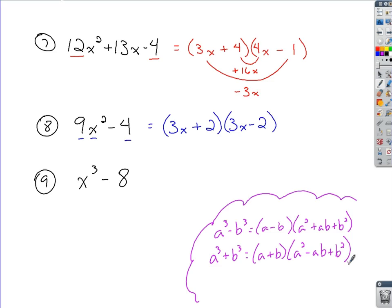Sum of cubes would be A plus B times A squared minus AB plus B squared. So you might want to keep those handy since we're not used to seeing those quite as often as the difference of two squares. Difference of two squares like we saw in number eight, pretty common. Sum of two squares can't be factored. Just to make sure that's clear. But difference of cubes, sum of cubes, there you go.